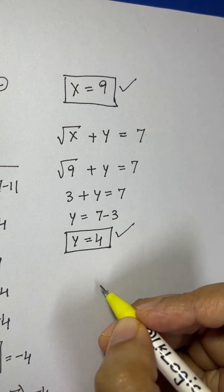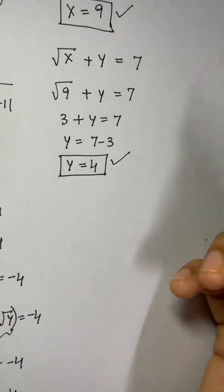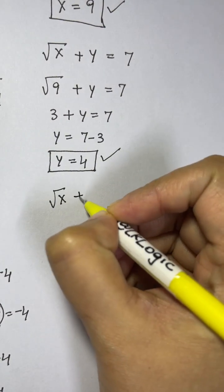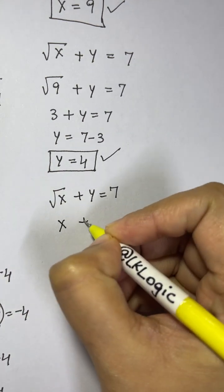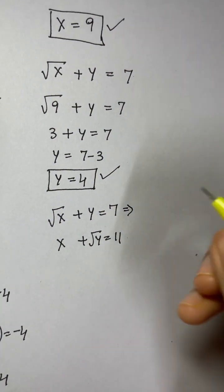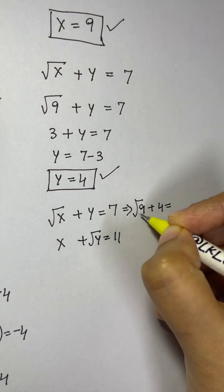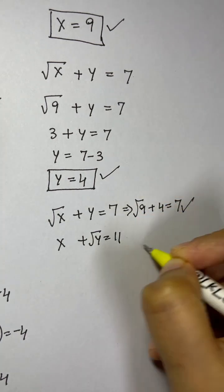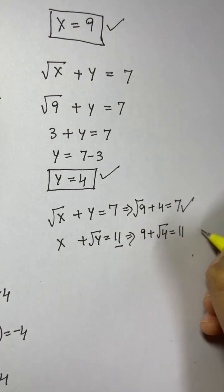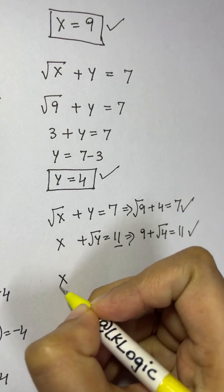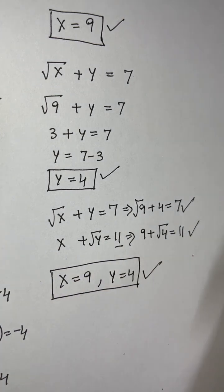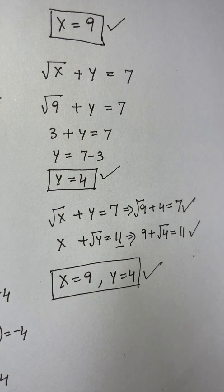Let's verify by substituting into both original equations. First: root 9 plus 4 equals 3 plus 4 equals 7 — correct. Second: 9 plus root 4 equals 9 plus 2 equals 11 — correct. Both equations are satisfied, so x equals 9 and y equals 4 is the solution. I hope you liked this — don't forget to subscribe, thank you, bye-bye!